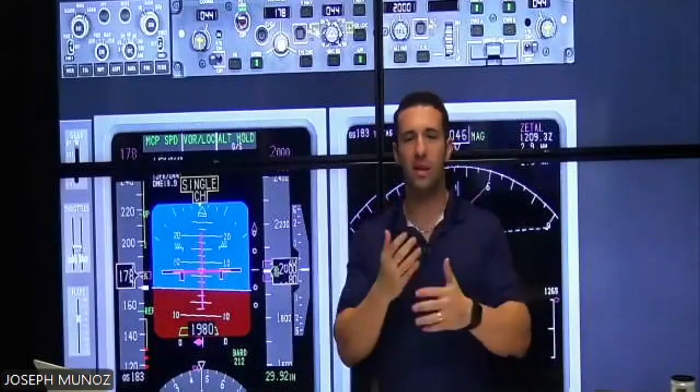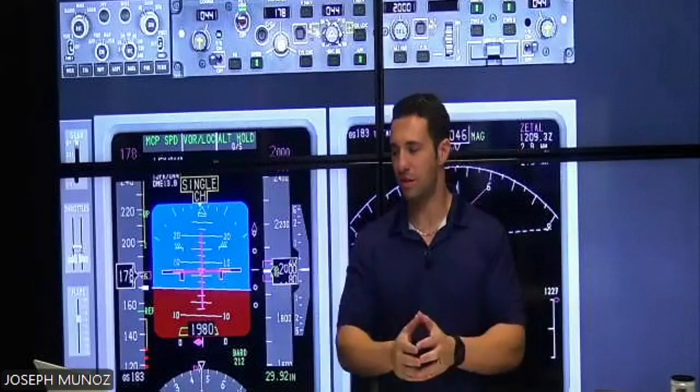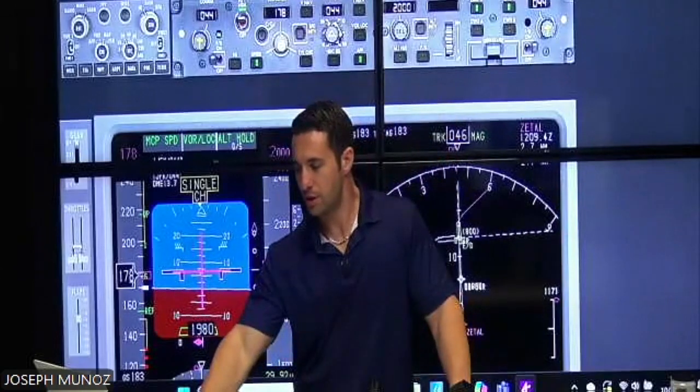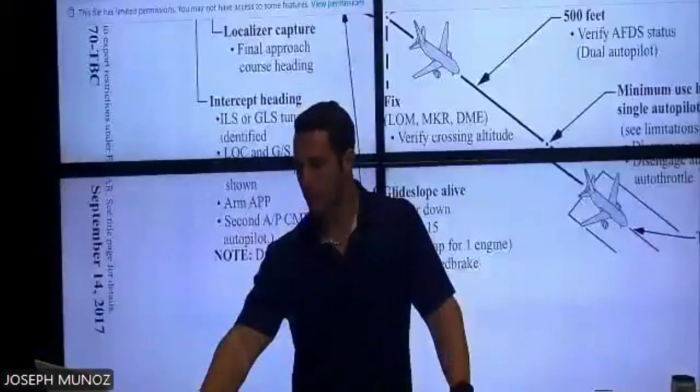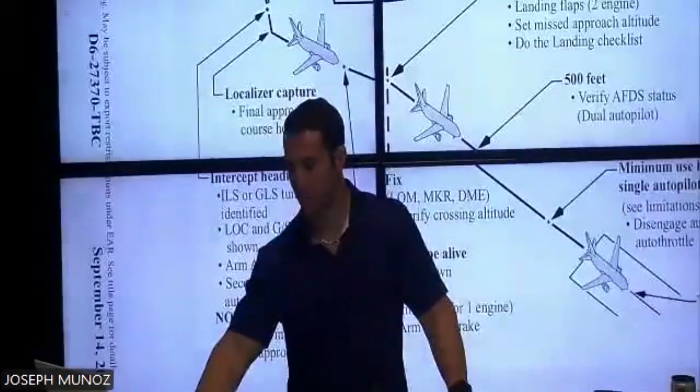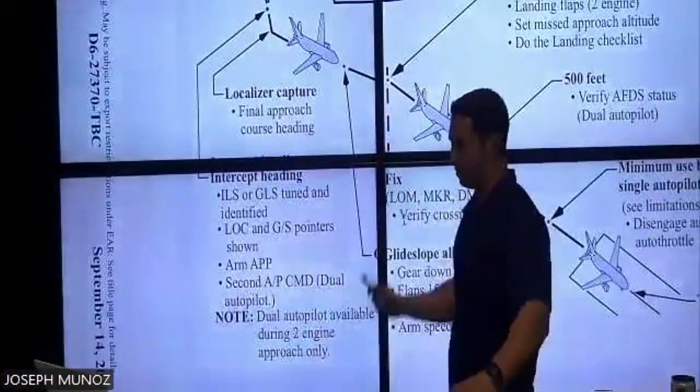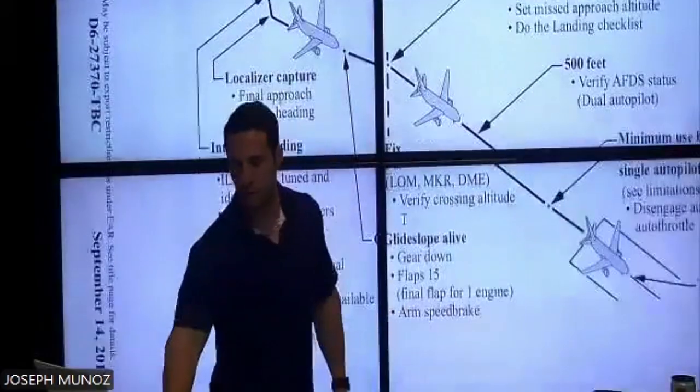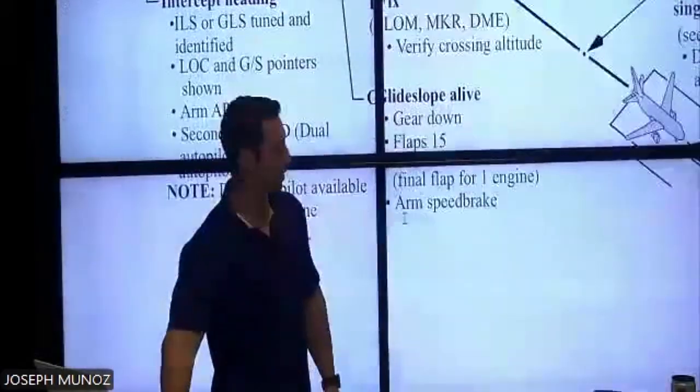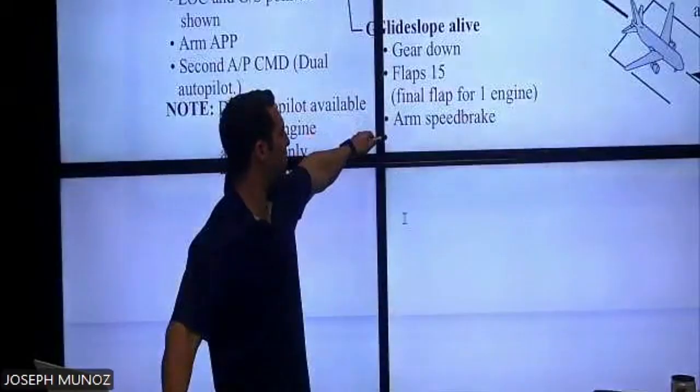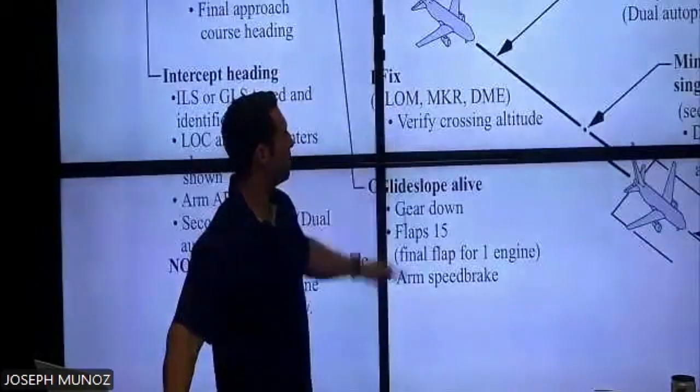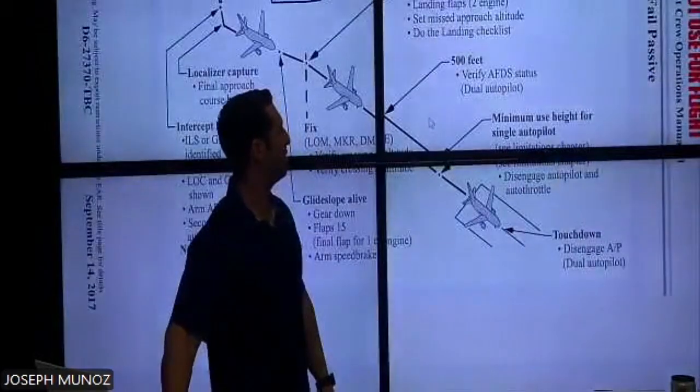Where do you see that? How do you know to do all these things? That is in the QRH, in the flight patterns section. Glide slope alive, gear down, flap 15, arm speed brake. That's where you see that.